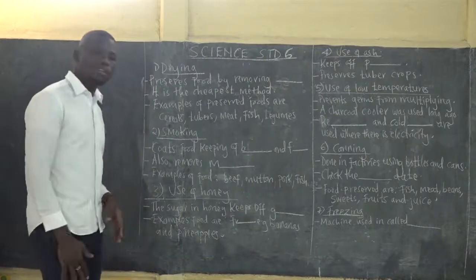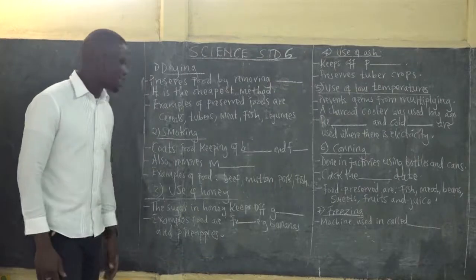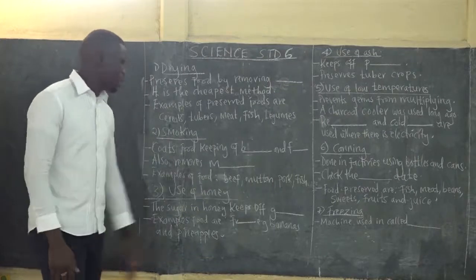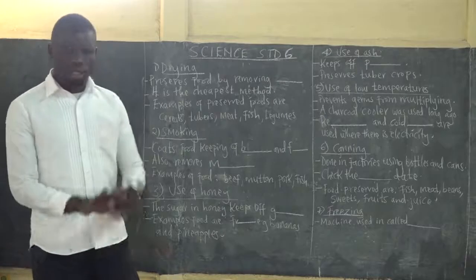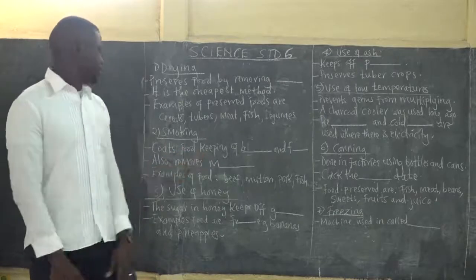Examples of food preserved by smoking include beef, mutton, pork, and fish — specifically meat products.